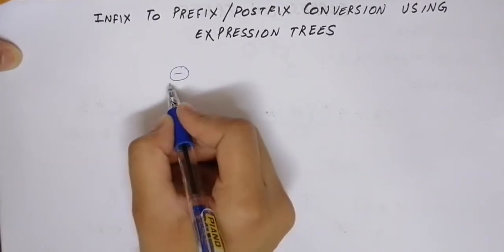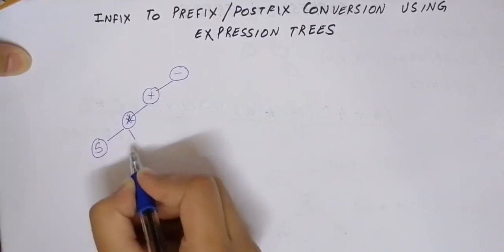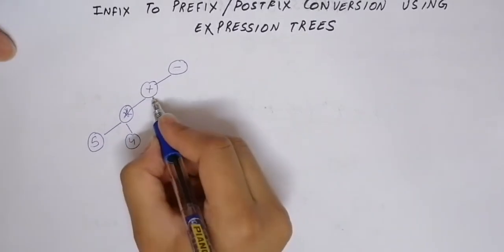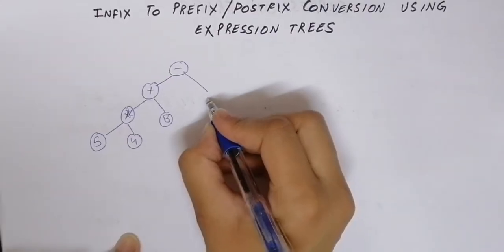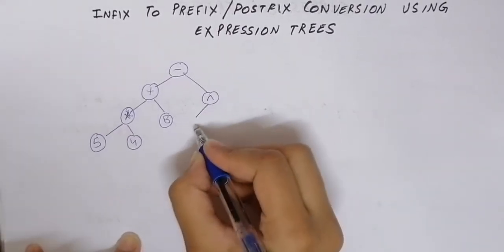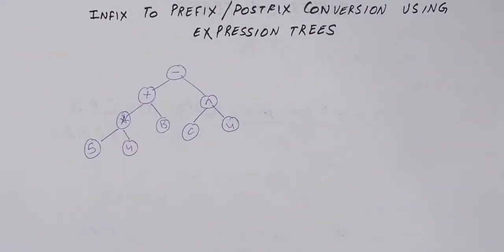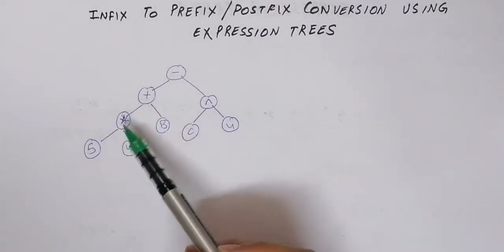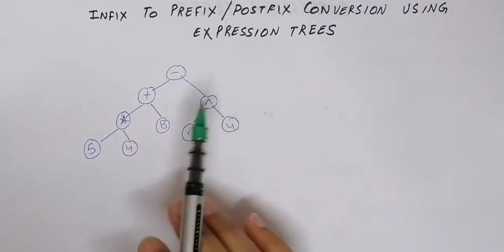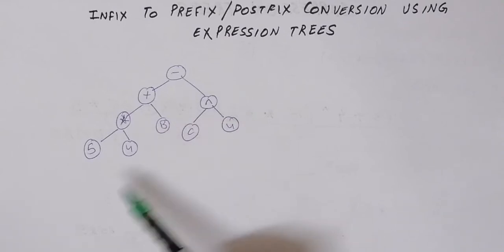Let's say we are performing operations like minus, plus, multiply, and using operands like 5, 4, B, and on this side we have C power 4. This is our given expression tree. You can see different operators — minus, plus, multiply, and power — and it is a valid expression tree because it is a binary tree.